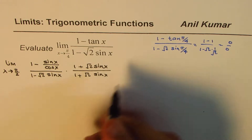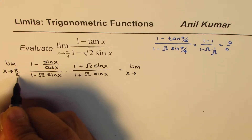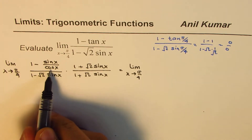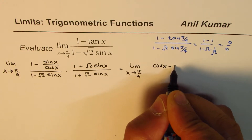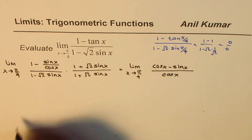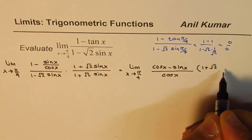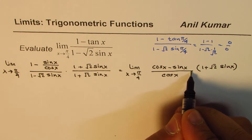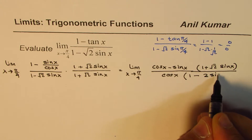The denominator becomes a difference of squares. Taking the common denominator, the numerator becomes (cos x - sin x) divided by cos x, multiplied by (1 + √2 sin x). The denominator simplifies as a difference of squares, giving us 1 minus 2 sin²x.